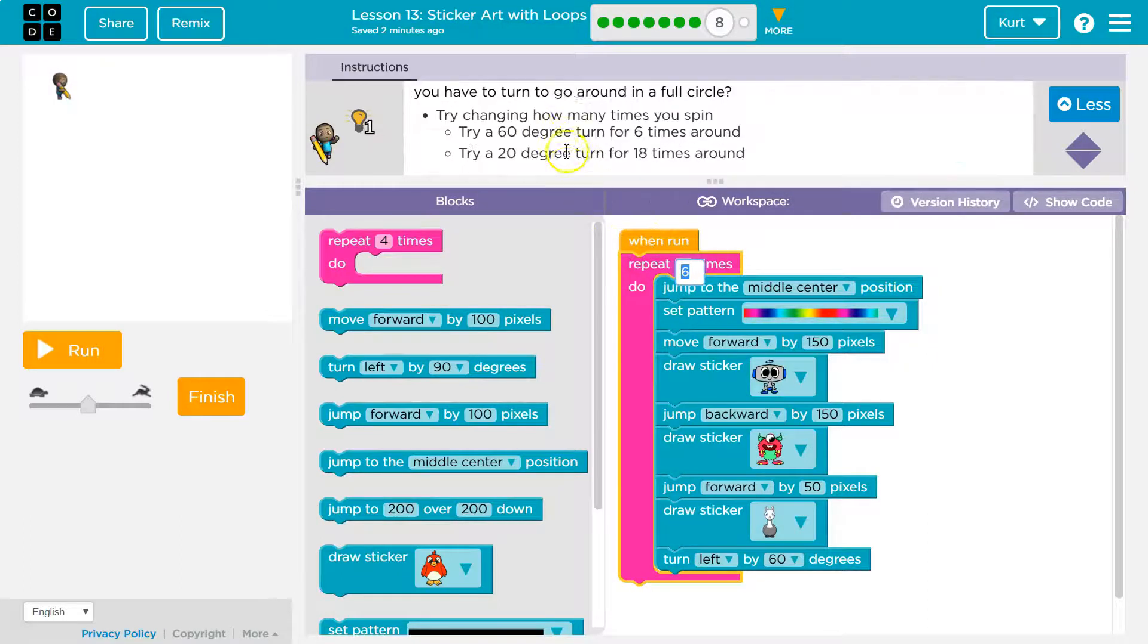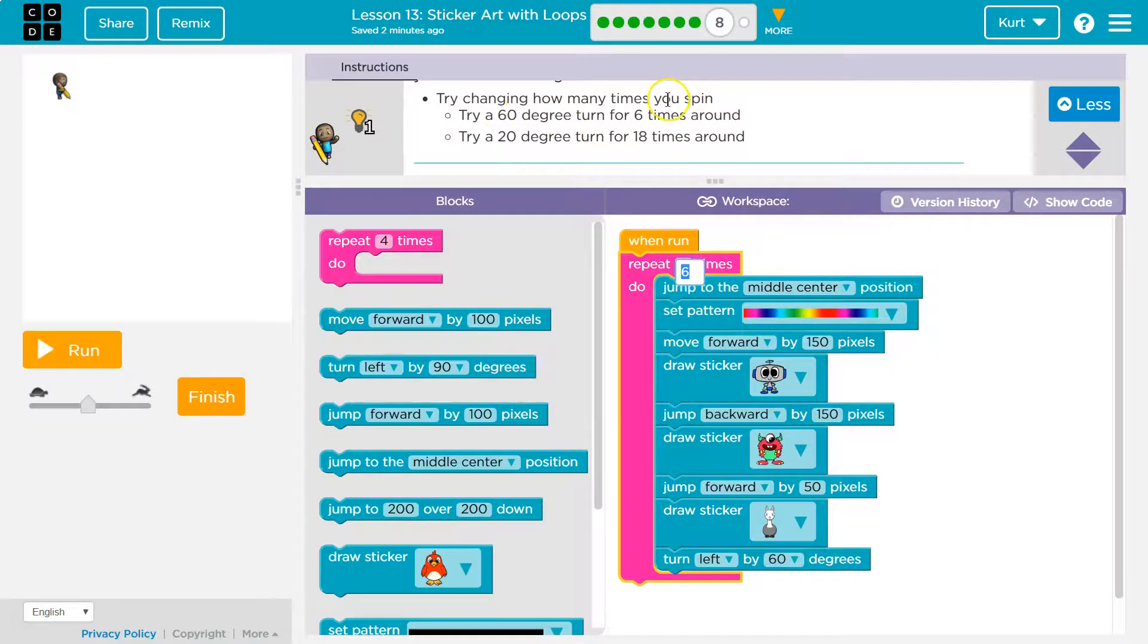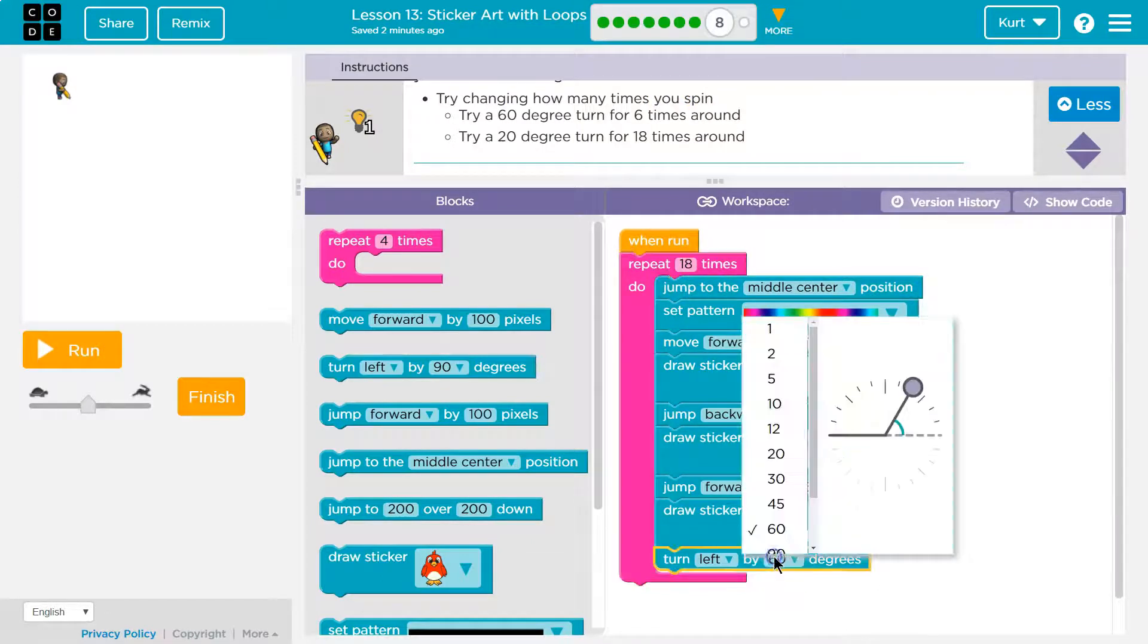360? Try changing it to 60 for six times. That's what I did. Okay, 18 times. That seems like a lot and then we're gonna turn 20.